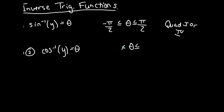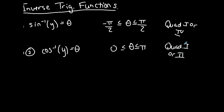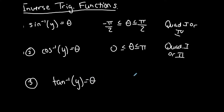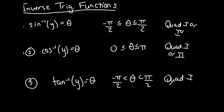For cosine inverse, the output angle is restricted between zero and pi, which is quadrants one or two. Cosine is negative in quadrant two and positive in quadrant one; sine is negative in quadrant four and positive in quadrant one. For inverse tangent, the angle is also limited between negative pi over two and pi over two, similar to sine, but this interval is not inclusive — we don't include the endpoints.